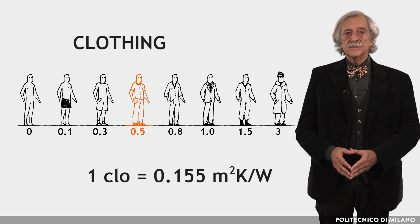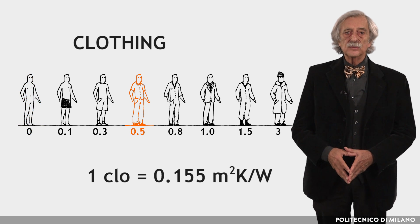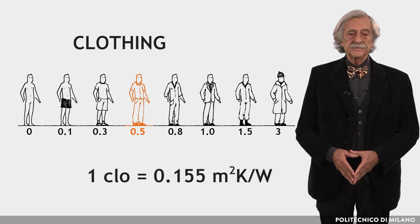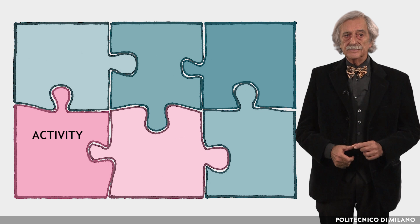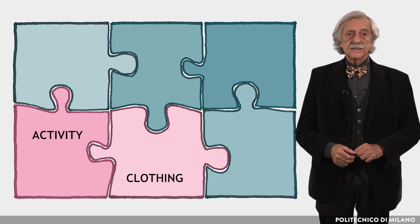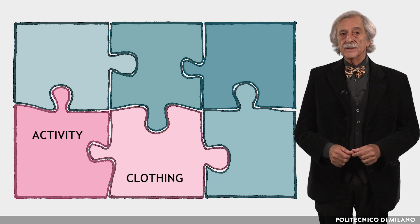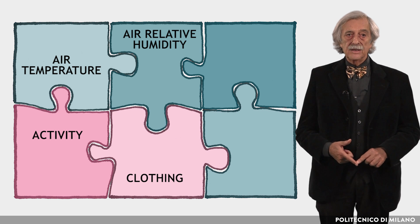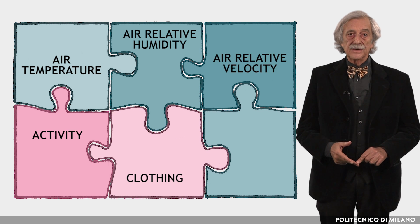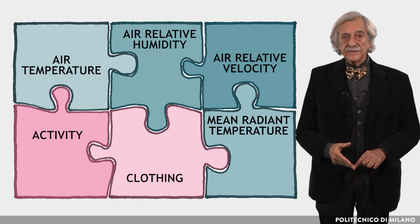The value CLO = 0.5 corresponds to typical summer clothing. Summarizing, the body's heat balance, hence thermal comfort, depends on six factors, of which two are personal and four are environmental. The personal factors are activity and clothing. The environmental factors are air temperature, air relative humidity, air relative velocity, and mean radiant temperature.